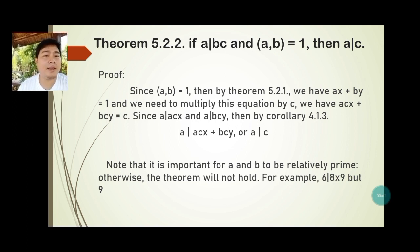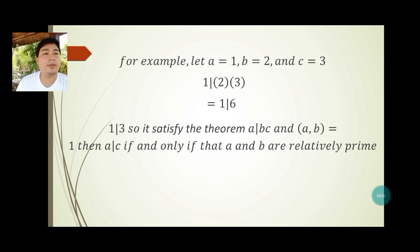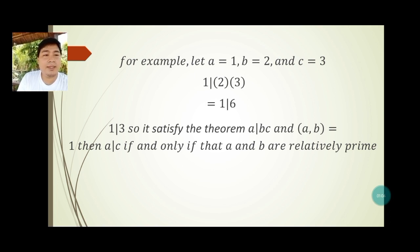Note that it is important for a and b to be relatively prime, otherwise the theorem will not hold. Example: let a = 1, b = 2, c = 3; 1 divides 2 × 3 = 6, and 1 divides 3, so it satisfies the theorem: if a divides bc and gcd(a, b) = 1, then a divides c, provided a and b are relatively prime.